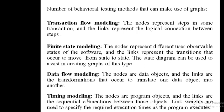In timing modeling, the nodes represent program objects, and the links are the sequential connections between those objects. Program objects are represented as nodes, and the sequential connection between two different program objects is represented as links. Additionally, link weights are used to specify the required execution time as the program executes — so link weights represent the execution time of the program.